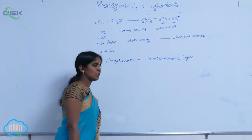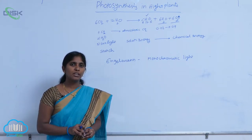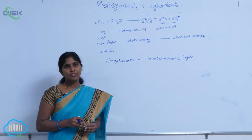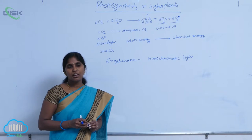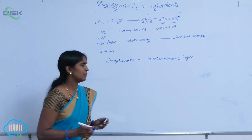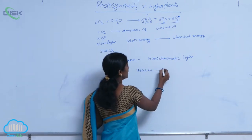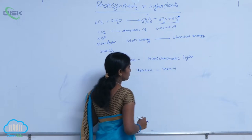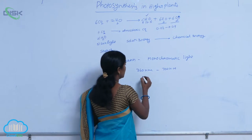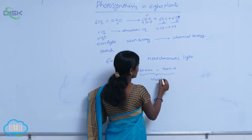Sunlight is composed of many rays like UV rays, ultraviolet rays, red rays, blue rays, and visible rays. The visible rays that are suitable for photosynthesis have approximately 360 nanometers to 700 nanometers of wavelength. So the rays present in the 360 to 700 nanometer range are called visible rays.